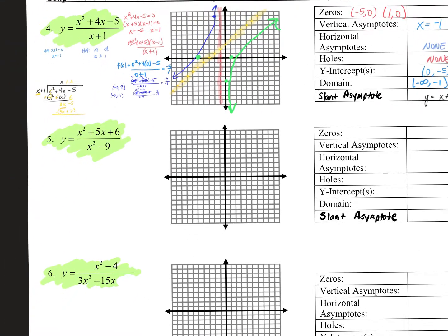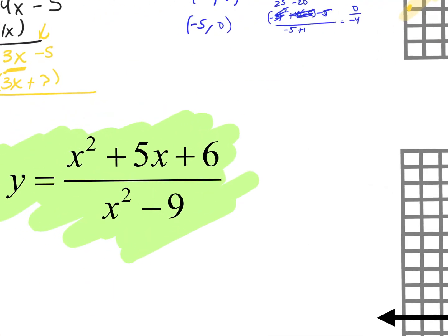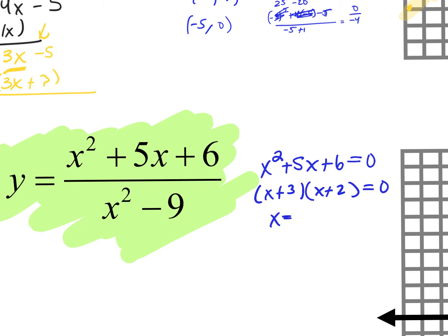Let's look at number two — it's a little bit different. Some of you had questions about it. Zeros — how do you find them? Set the numerator equal to zero. So x squared plus 5x plus 6 equals zero. When I factor this: x plus 3 and x plus 2. So I have zeros at x equals negative 3 and x equals negative 2 — written as ordered pairs negative 2 comma 0 and negative 3 comma 0.